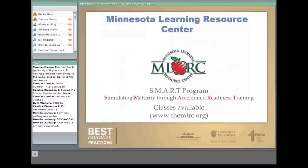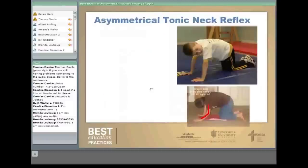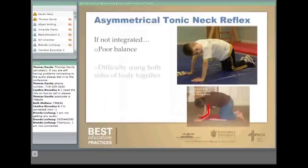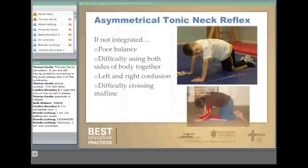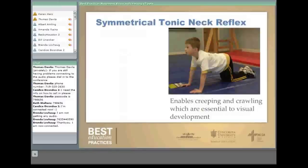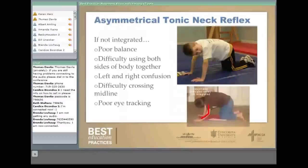There are about four reflexes that tend to hang on and cause learning problems. The asymmetrical tonic neck reflex — if not integrated — can cause poor balance, difficulty using both sides of the body together, left-right confusion, difficulty crossing the midline, and poor eye tracking. The exercise for this is called the rocker: the student rocks back and forth with their head turned to the left ten times, then to the right ten times. A student who has trouble will often bend their elbow — that is a sure sign the reflex is not integrated.